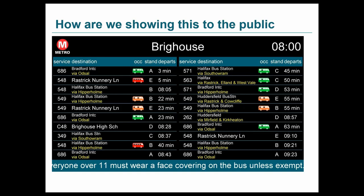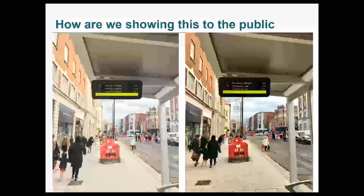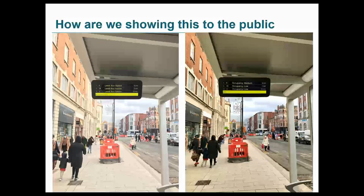We're just about to roll out a number of totem TFT screens using the same principle, with explanatory advertising underneath explaining what things mean — currently everything's green because there's quite a lot of capacity on buses at the moment. We've also just started rolling out in Leeds city centre using the similar basis where the display rotates from the destination through to an occupancy level, and then to advertising indicating what these mean, passing on information to the public.